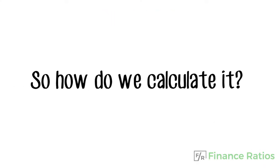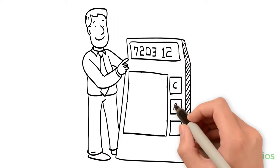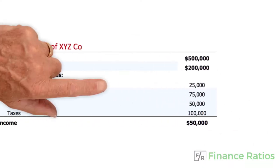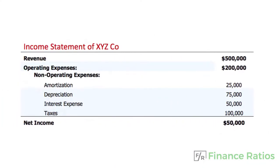So how do we calculate it? Let's take a look at the income statement of the XYZ company. It made $500,000 in revenue, spent $200,000 in operating expenses, and had also spent $25,000, $75,000, $50,000, and $100,000 on amortization, depreciation, interest, and taxes accordingly, and made $50,000 in net income.